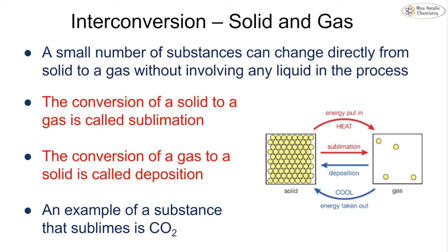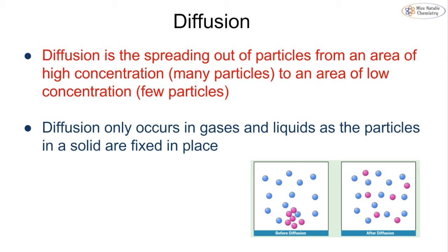A very small number of substances can change directly from a solid to a gas without involving any liquid — they completely bypass the liquid stage. The conversion of a solid to a gas is known as sublimation. A common substance that does this is carbon, which will sublimate from a solid into a gas at very high temperature. We can also go the other way, where a gas turns straight back into a solid — that is known as deposition. An example is carbon dioxide, or dry ice, going from solid straight into a gas.